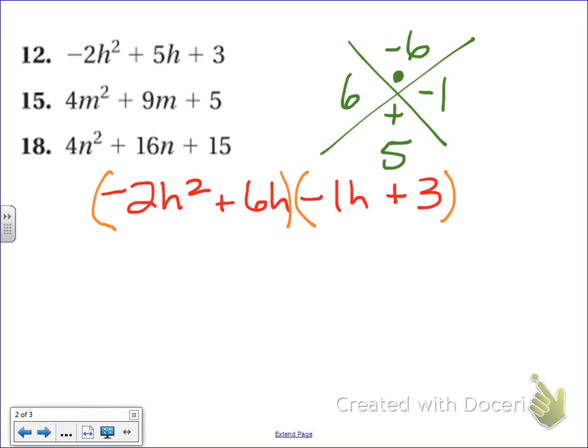And I see that there's an h squared and an h. I can pull out an h from both of those as well. So when I pull out a negative 2h, I'm going to get that. And then what's left over is h minus 3.